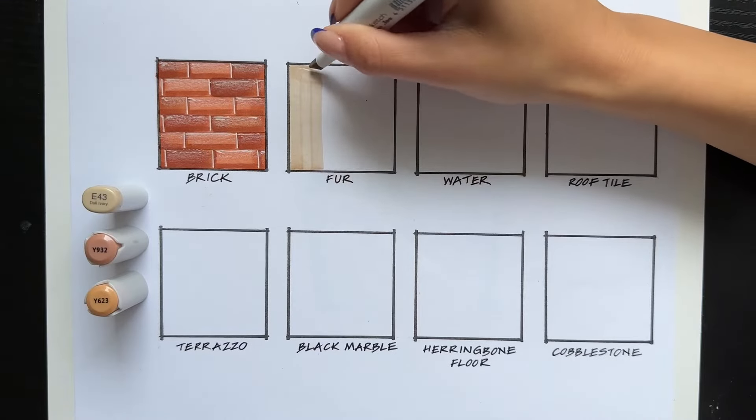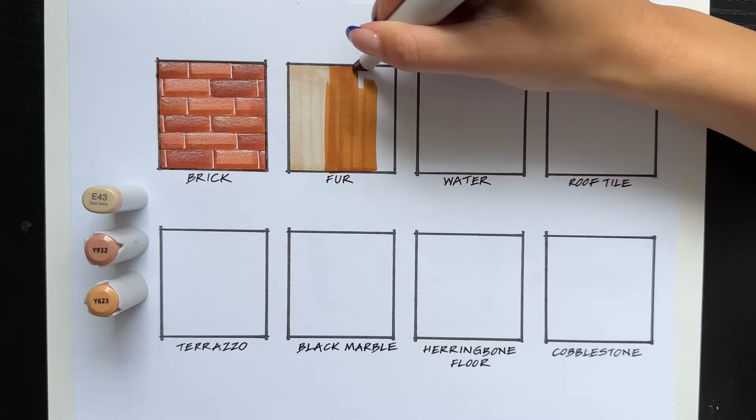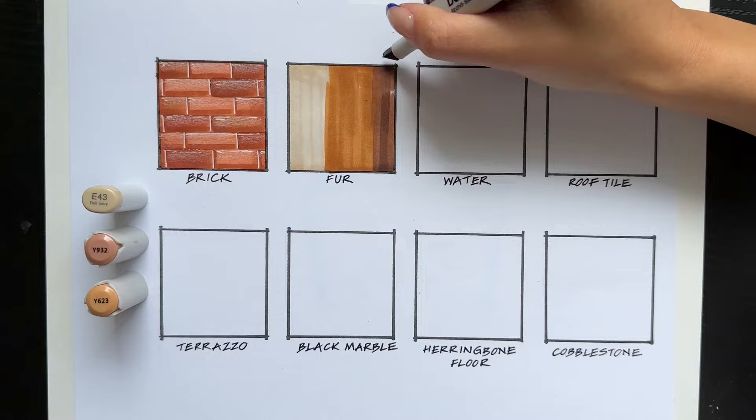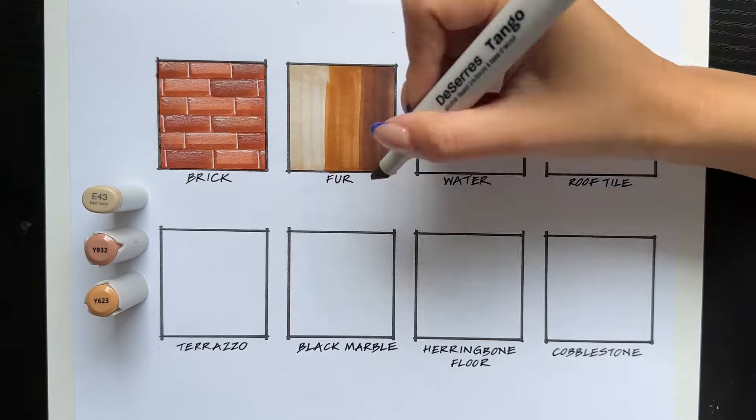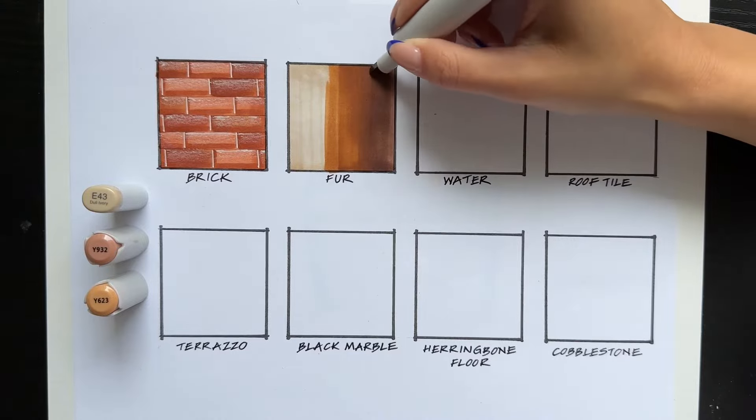With fur, I'm going to first create a gradient using three different colored markers in the light brown range. So what you're going to do is, when you put down the darker color, you use the lighter marker to go back on top of the darker color, just to blend it out and create more of a gradual gradient.